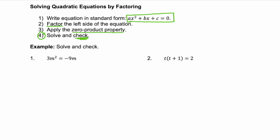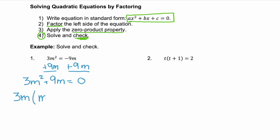Let's look at example one: 3m squared equals negative 9m. This isn't in standard form, so we need to add 9m to both sides. That moves the 9m to the left-hand side and gives us 3m squared plus 9m equals zero. Now that it equals zero, it's in standard form. We can factor the left-hand side. We look for a GCF, which is 3m. We factor out 3m and we're left with the binomial m plus 3.